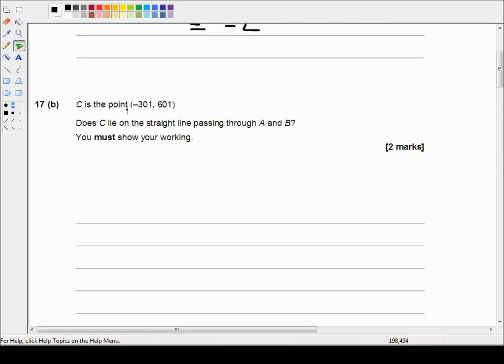Okay so C is the point (-301, 601). Does C lie on the straight line passing through A and B? You must show your working. Okay well there's several ways we could go about this.